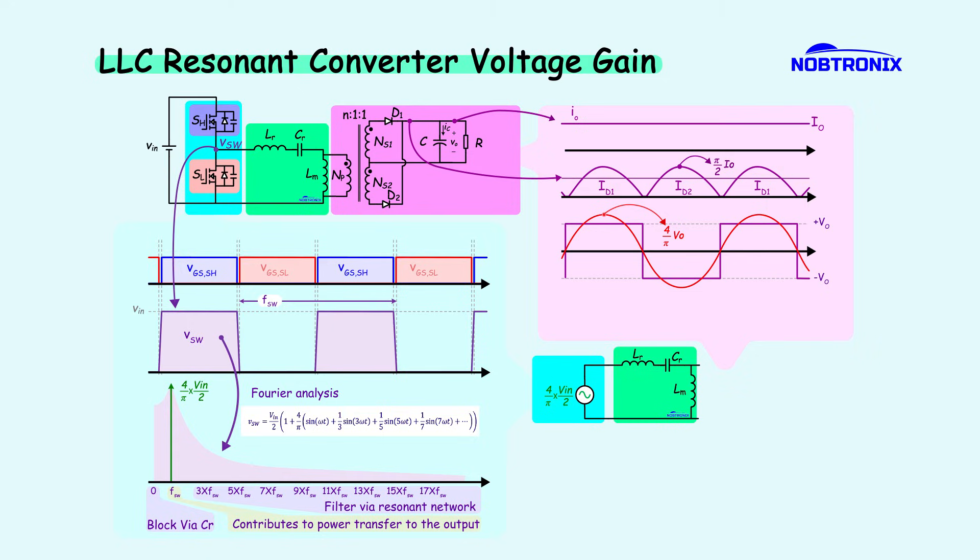To reflect this equivalent load to the primary side, we multiply by the square of the turns ratio. Then, the output stage can be modeled as a simple resistor of this value. From here, we can derive the final voltage gain equation, which expresses the relationship between input and output voltage.